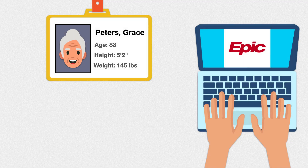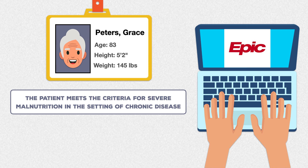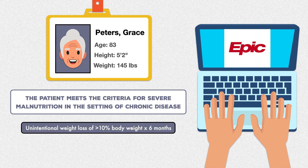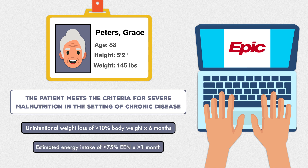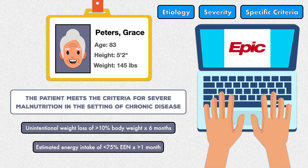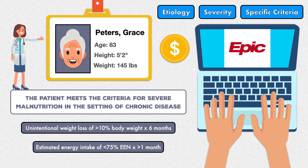Given all the information gathered in the assessment, the patient meets the criteria for severe malnutrition in the setting of chronic disease. This is supported by a significant unintentional weight loss of greater than 10% body weight in 6 months, and an estimated energy intake of less than 75% of the energy demand for greater than 1 month. Notice how the etiology, the severity, and the specific criteria that were met are all included in the diagnosis. The diagnosis will then need to be endorsed by the medical doctor caring for the patient so it can be properly coded and submitted for reimbursement.